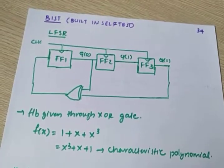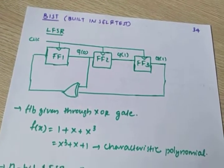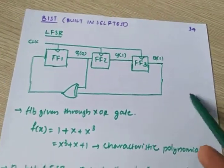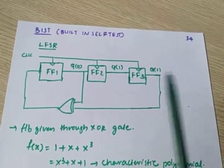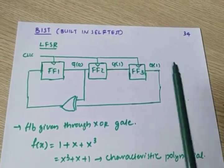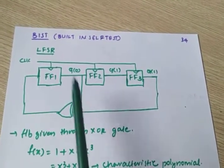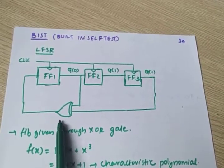PRSG is classified into LFSR and CFSR. LFSR means linear feedback shift register — there is a feedback from output to input through an XOR gate.